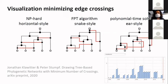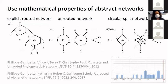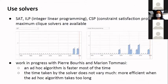We can also use solvers — not only mathematical theorems, but also SAT solvers, ILP solvers, CSP solvers. It's quite rare for the moment but it starts to work, and we are doing this with our colleagues in Lille for tree containment. It's also interesting to note that authors like Jonathan Claviter and Peter Stumpf come from graph theory with a background in graph drawing, and they have applied it to the field of phylogenetic networks. We also showed in 2012 and then in 2017 the links between abstract and explicit networks.